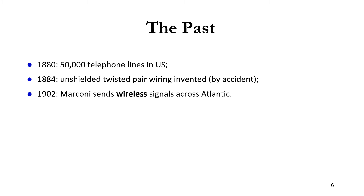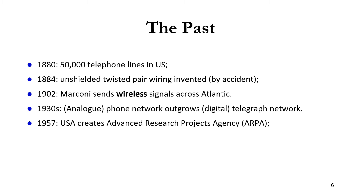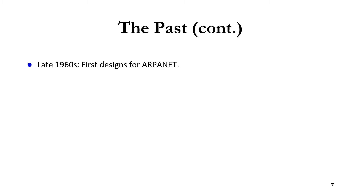In the 1880s, 50,000 telephone lines were established in the United States, and in 1884 unshielded twisted pair wiring was invented by accident. In 1902, Marconi sent wireless signals across the Atlantic. In the 1930s, analog phone networks outgrew digital — importantly, communication started digital with Morse code, went to analog, and is now returning to digital. In 1957 the USA created ARPA, the seed for the internet, optical fiber was first used for voice in the 1960s, and packet switching was invented.